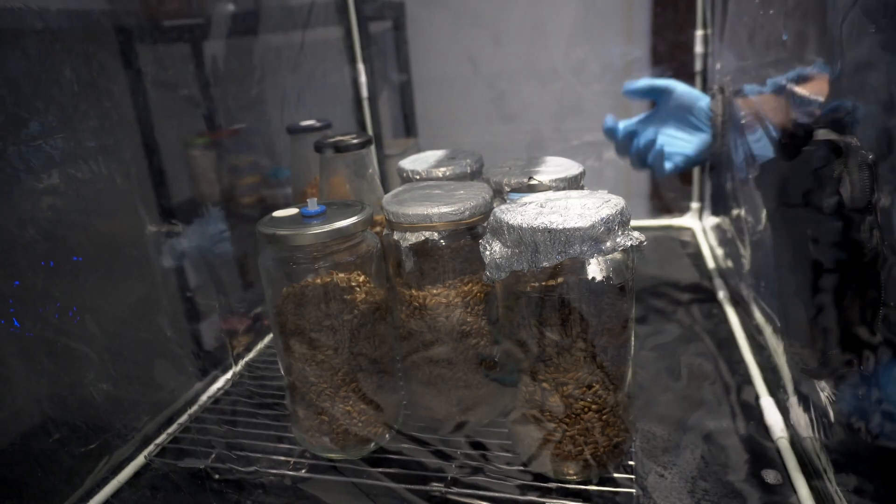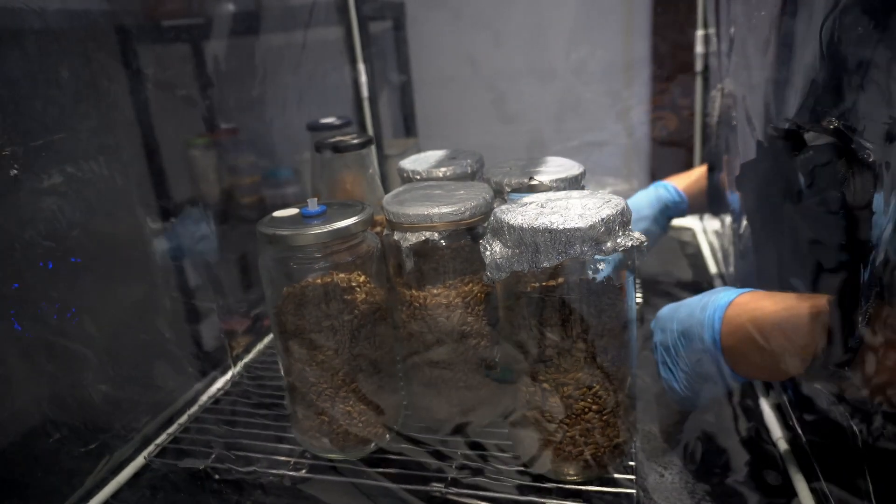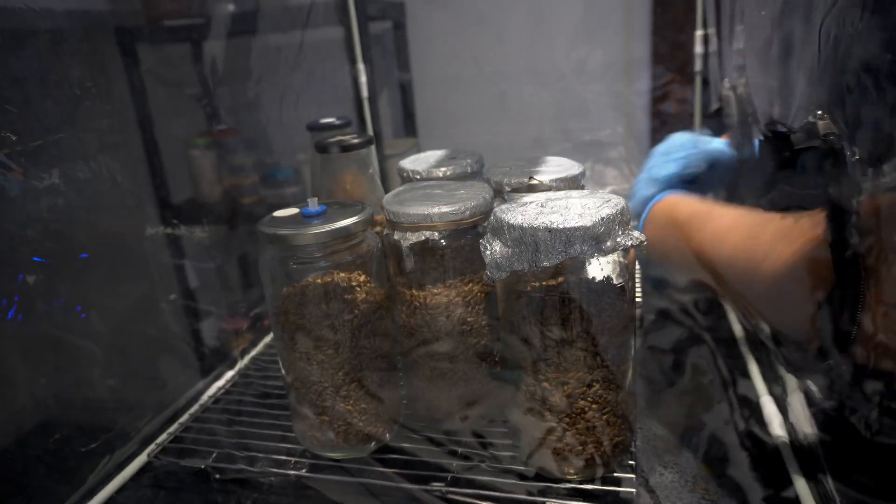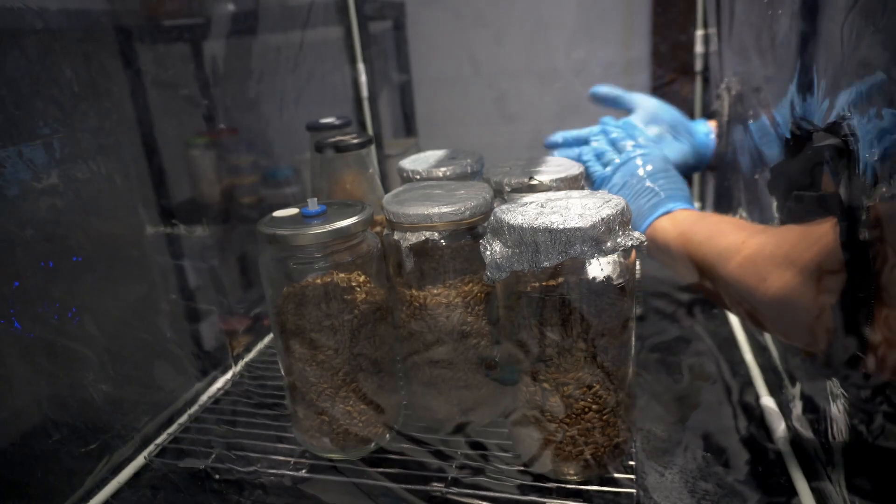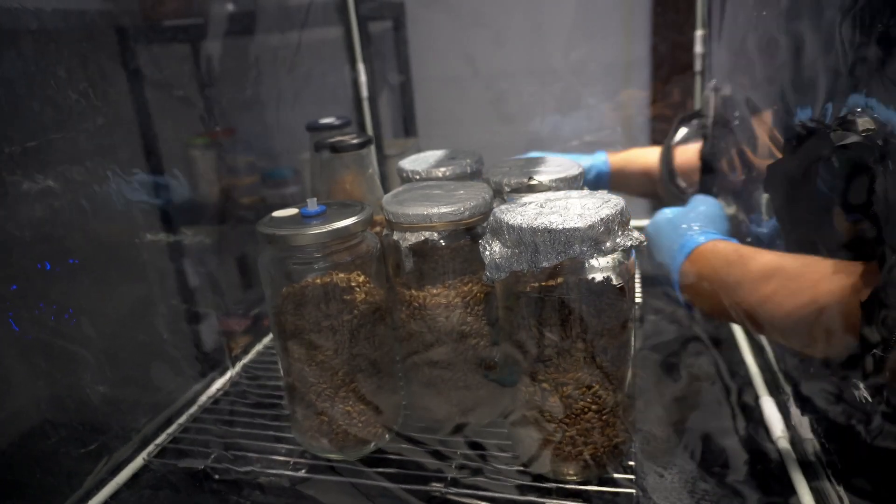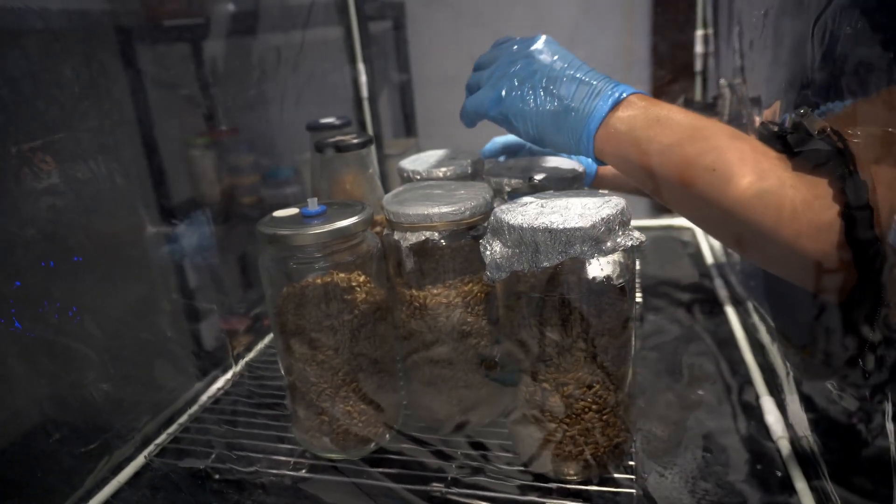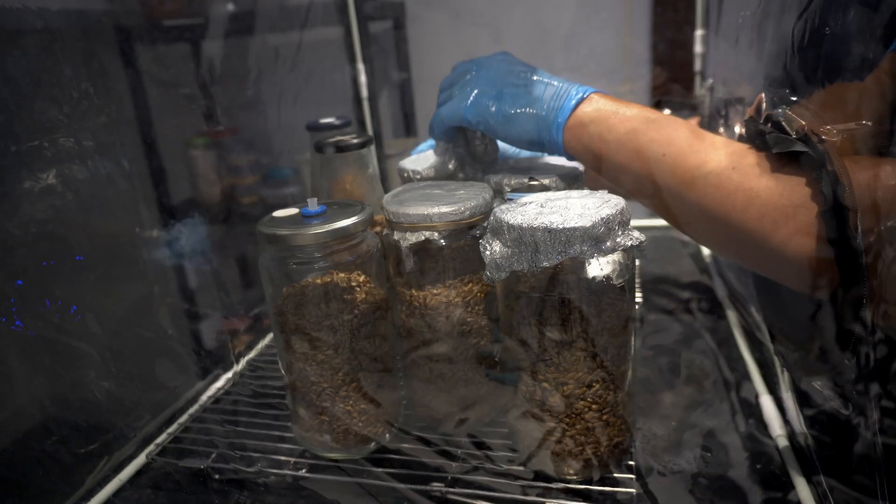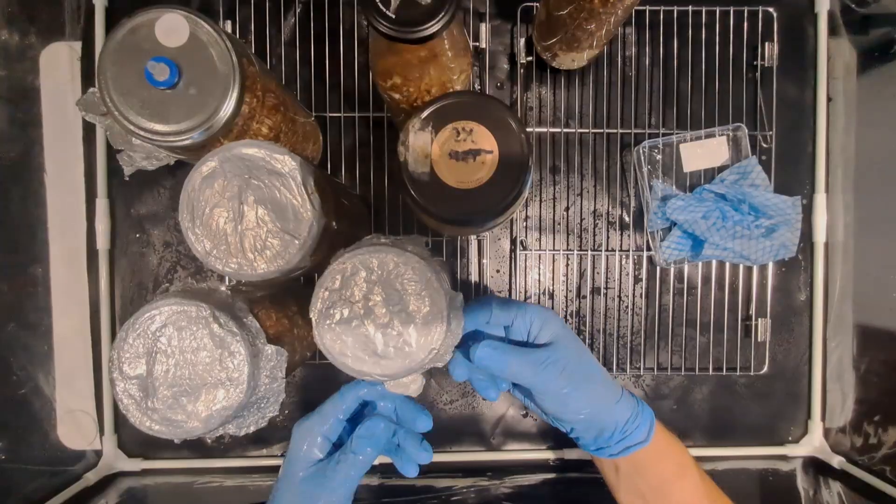You want to wipe your hands down with the 70% alcohol solution before you start working inside the still air box and it's probably a good idea to allow your hands to dry and the alcohol on the outside of the jars to dry before you start picking up jars.